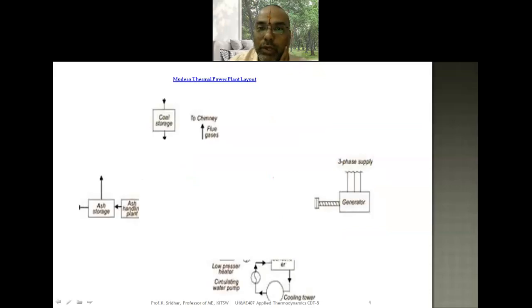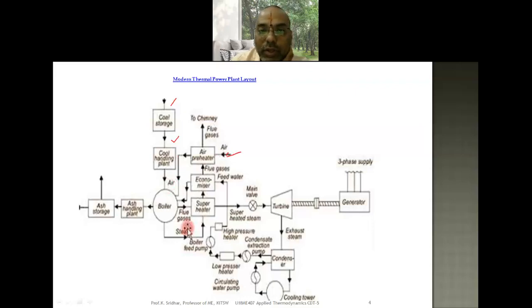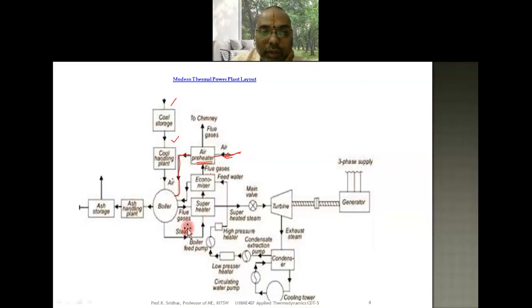The modern thermal power plant works as follows. There is a coal storage area from which coal goes to the coal handling plant. Air is circulated through an air passage, flowing to the air preheater. The flue gases leaving the boiler escape to the surrounding atmosphere via the chimney, but before doing so they pass through the air preheater, where the surrounding atmospheric air is further heated — hence the name air preheater. The preheated air then goes to the boiler, along with coal.